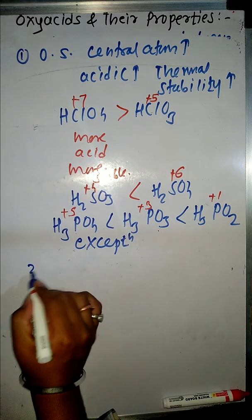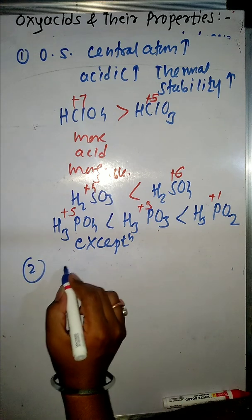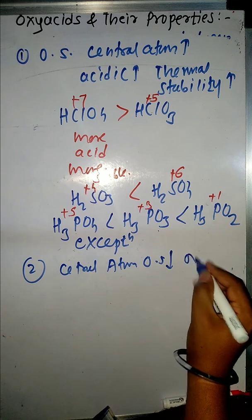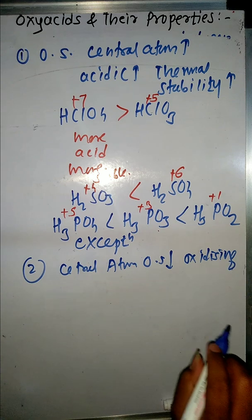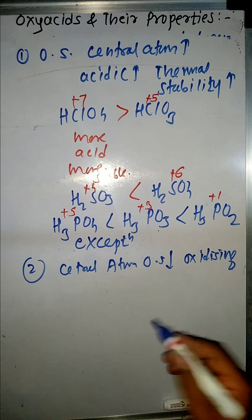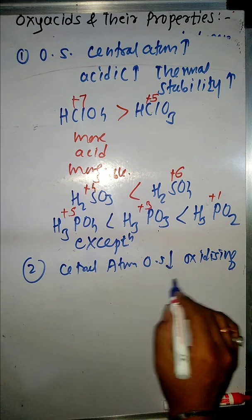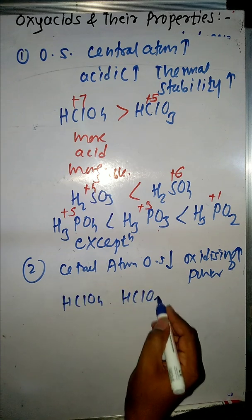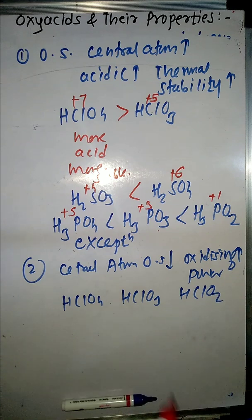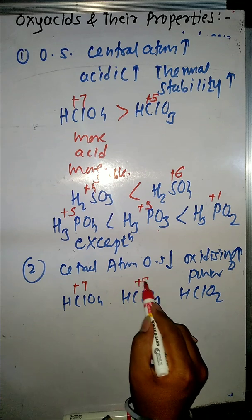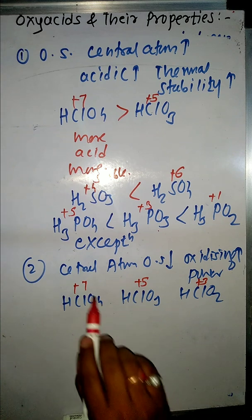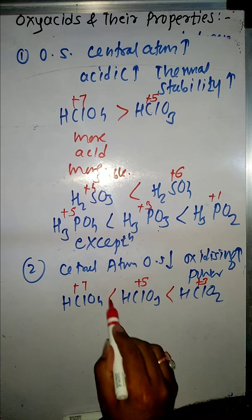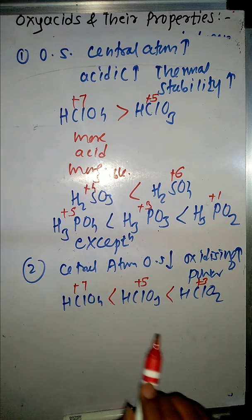Property 2: If the oxidation state of the central atom is less (lower), then its oxidizing power will be more. For example, comparing HClO4, HClO3, and HClO2: the oxidation states of chlorine are +7, +5, and +3 respectively. Since HClO2 has the lowest oxidation state, it is the most highly oxidizing, followed by HClO3, then HClO4. Oxidizing nature is always opposite to acidic character and thermal stability.